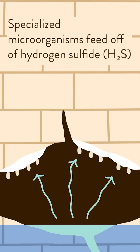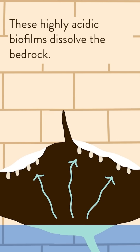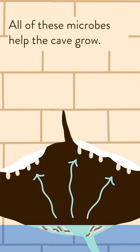Specialized microorganisms feed off of hydrogen sulfide, creating biofilms on the cave walls. These highly acidic biofilms dissolve the bedrock. Other types of microbes form biofilms in the streams. All of these microbes help the cave grow.